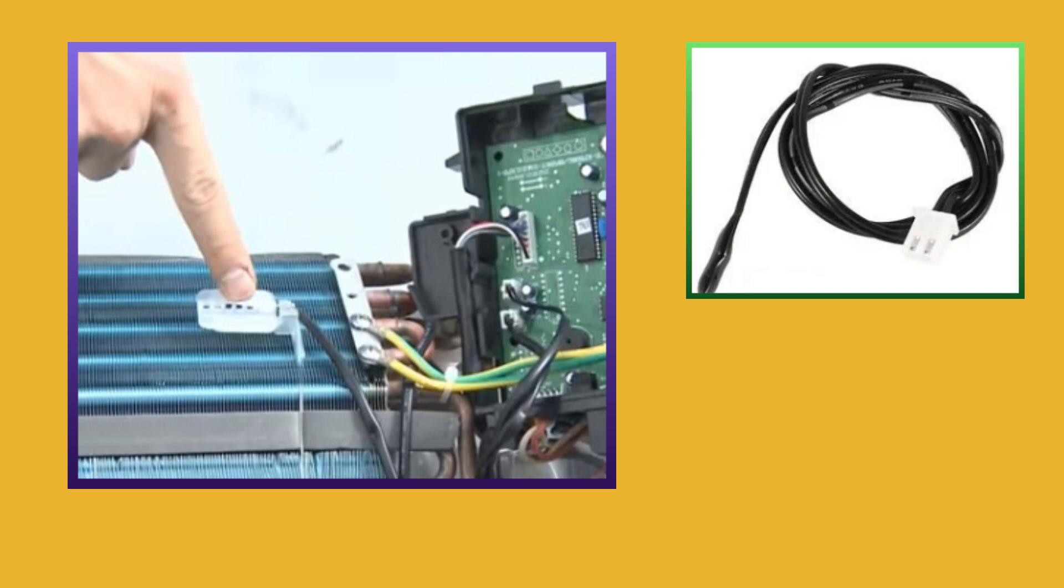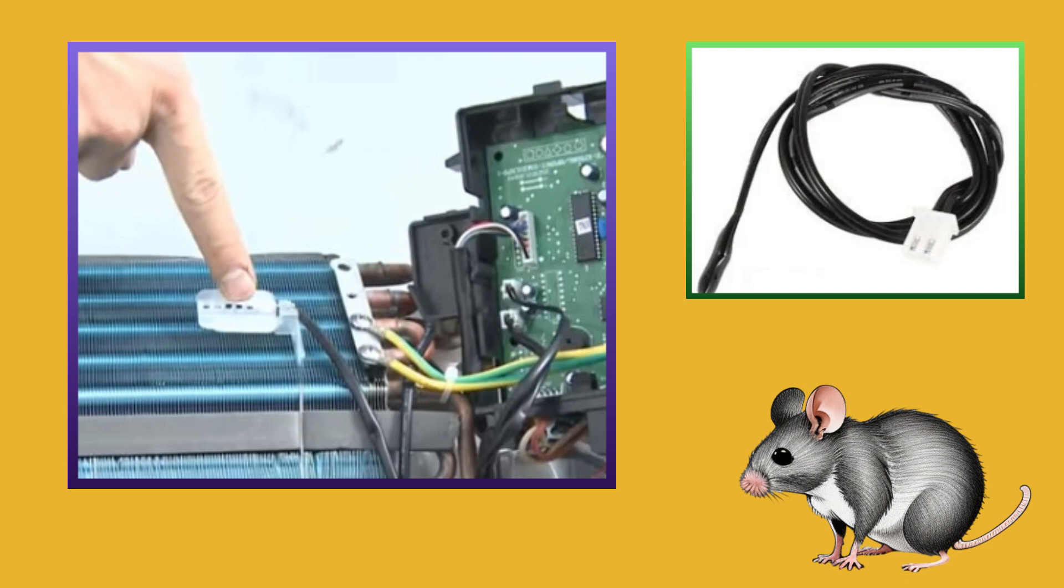It is possible that the rat may have cut the wire of the room temperature sensor. If the rat has cut the wire of the room temperature sensor, then reconnect the wire. Then this error will be completely fixed.